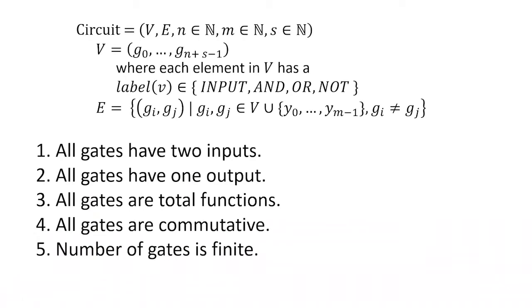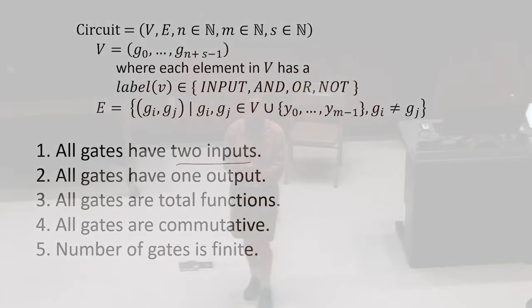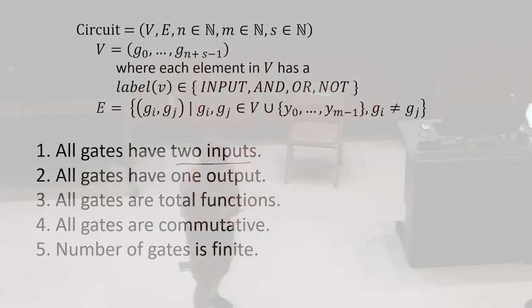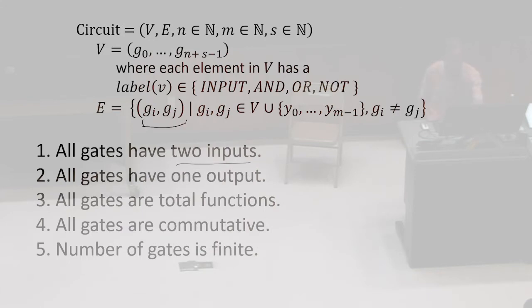Is there any assumption about gates having two inputs? No. If the edges are a set and we can have for a given J any number of I's matching it, then there's no such assumption.